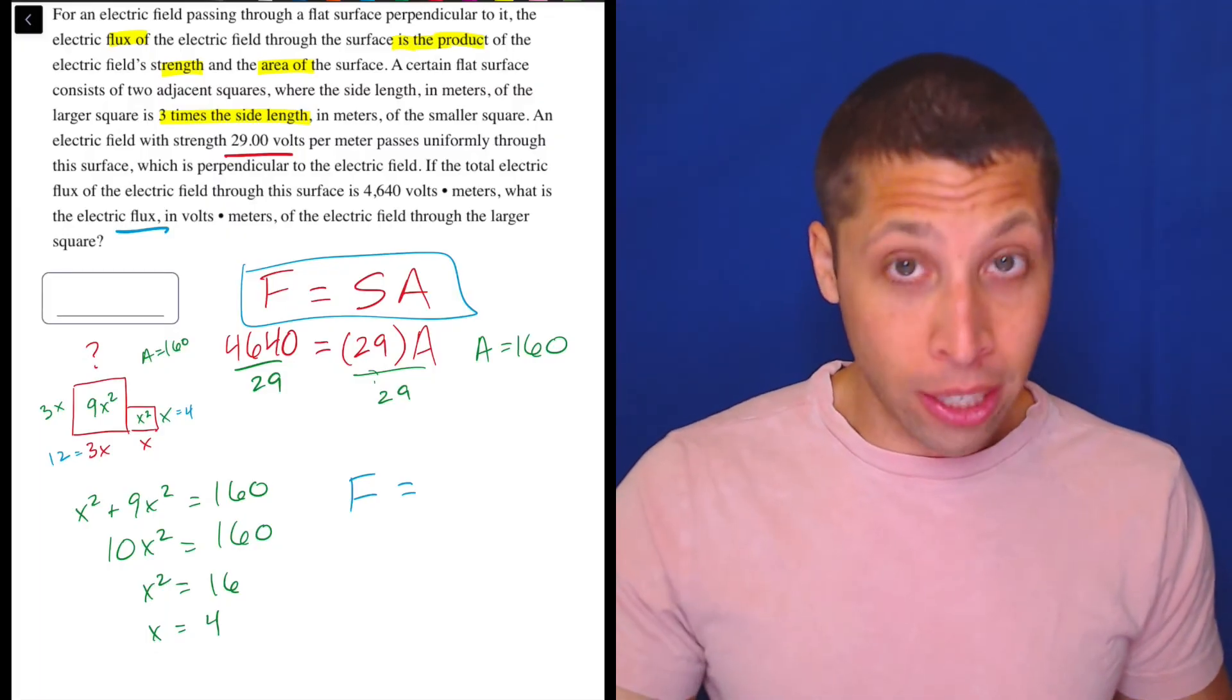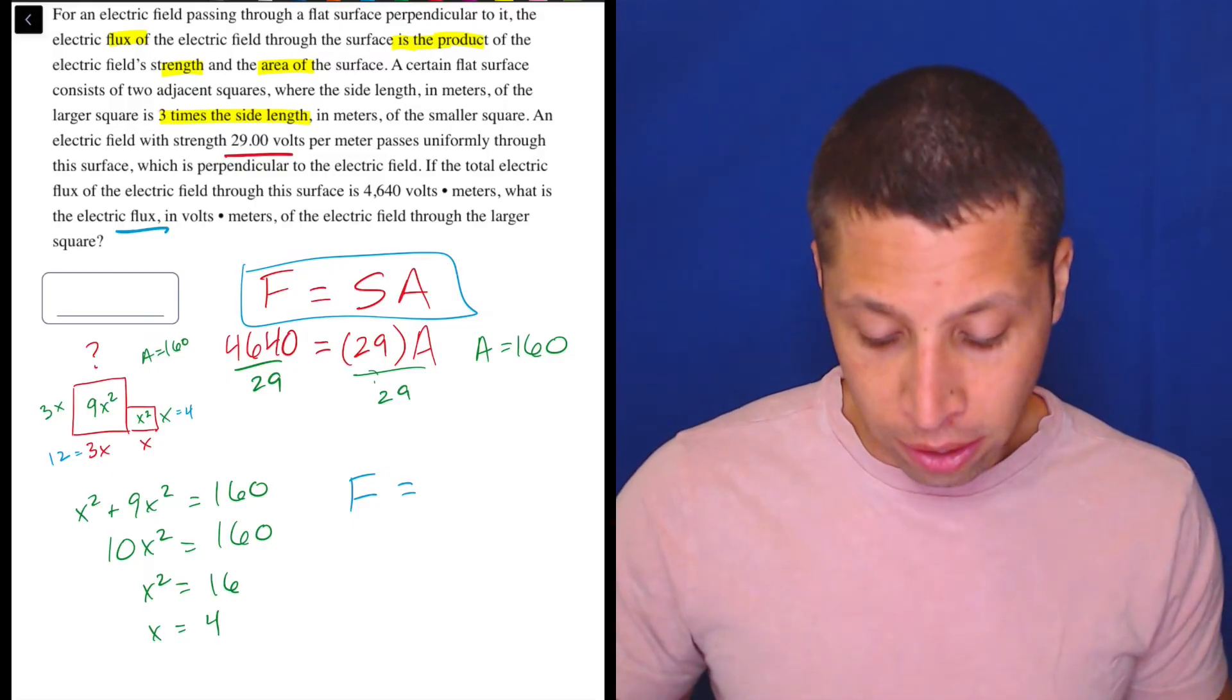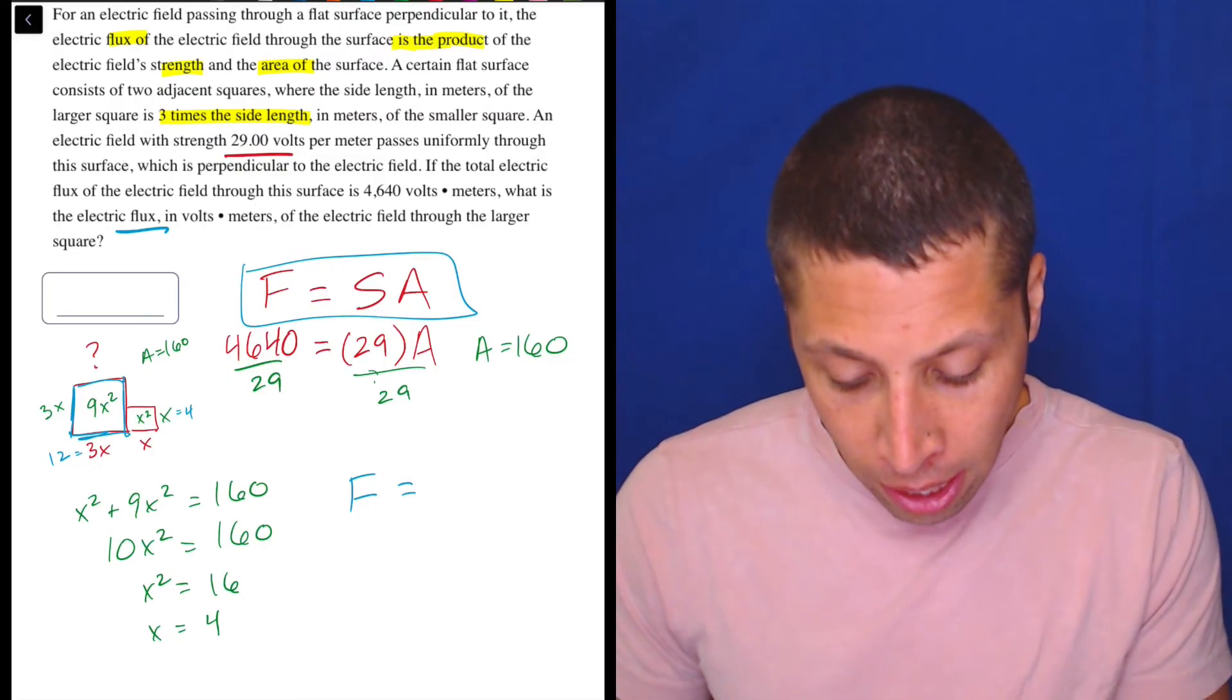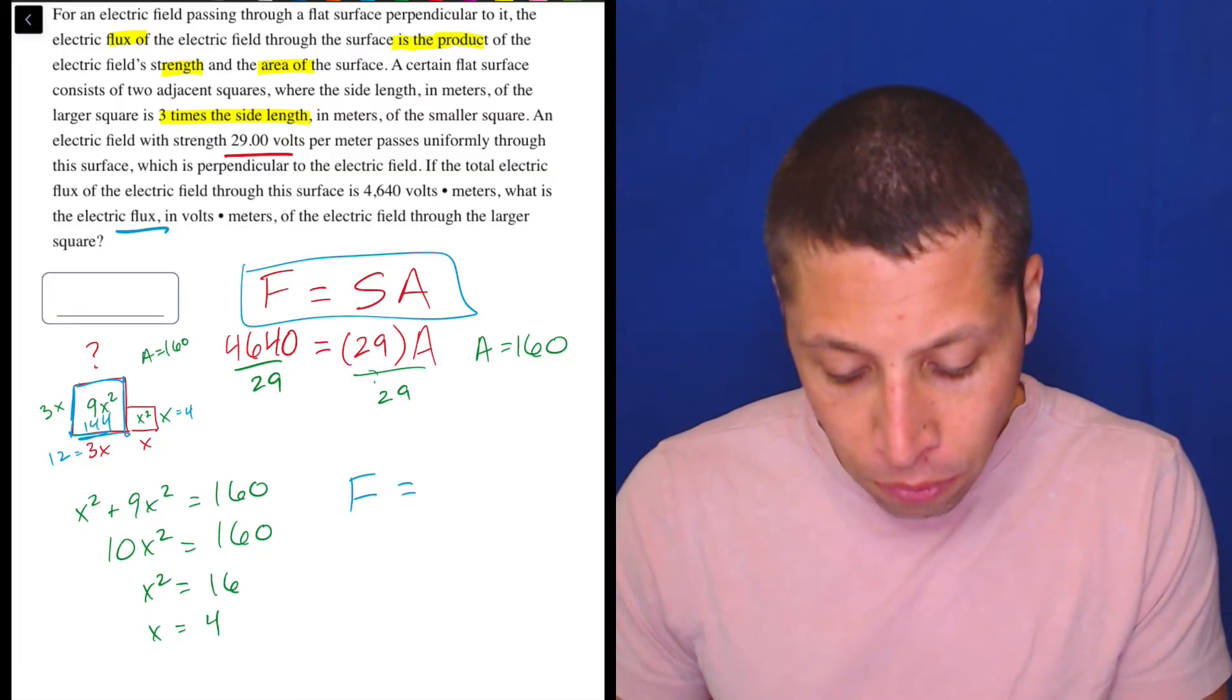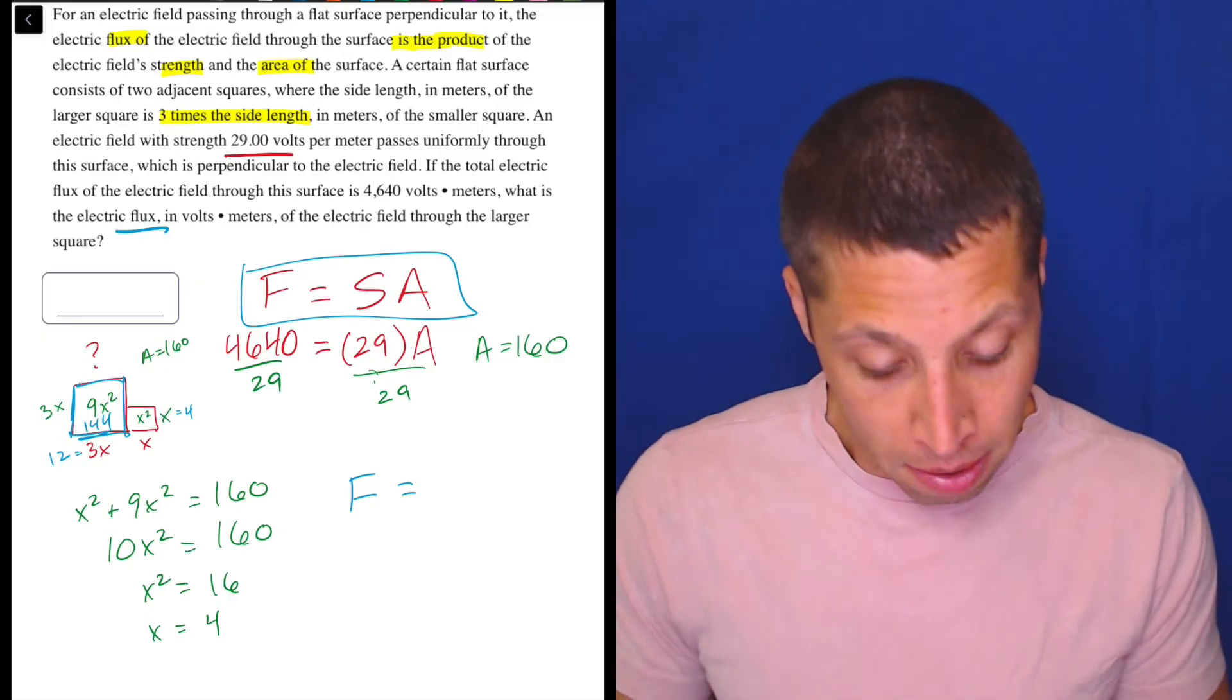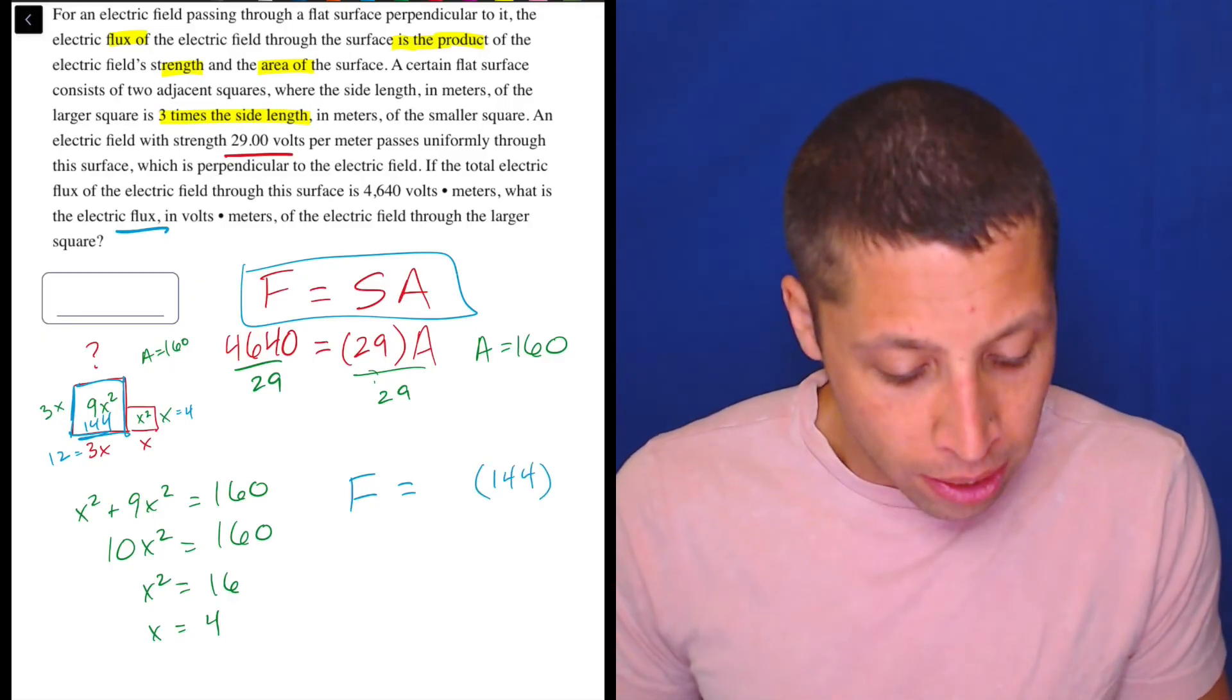Well, the area, I feel like I just figured it out. I just found the value of that X. So I know that the big square here is a 12 by 12. So 12 by 12 is 144. So the strength, I don't know yet, but 144 is the area.